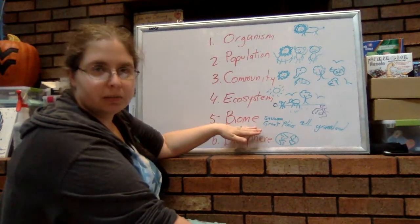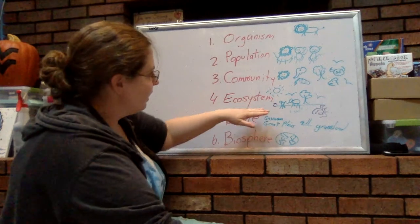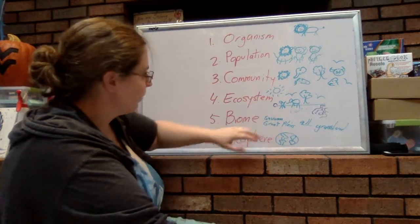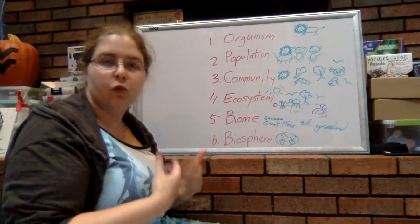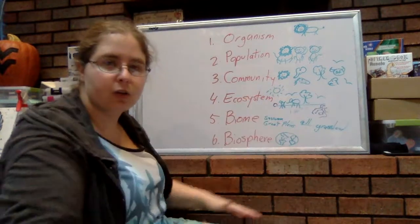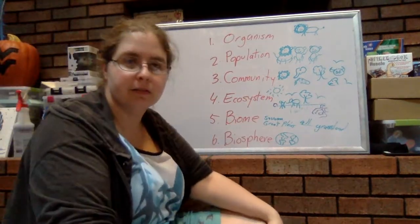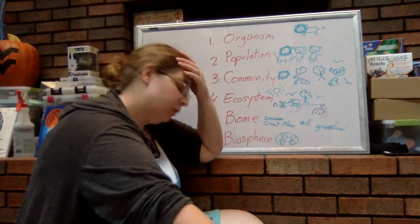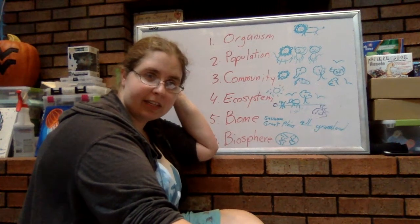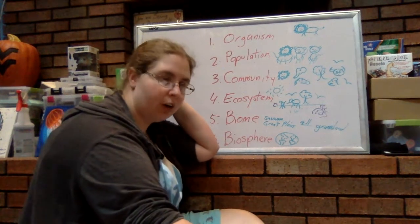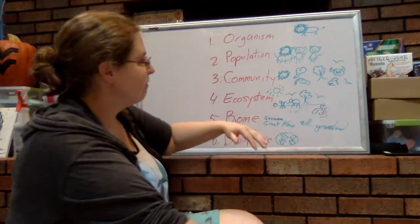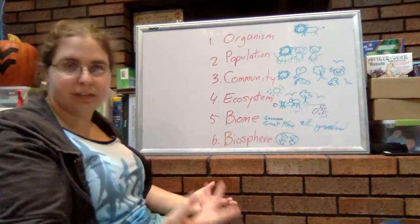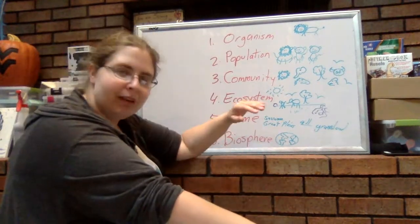Biome is all similar ecosystems. So we said that we were looking at a particular ecosystem, like the savanna. Biome would be grassland, and there are different grasslands around the whole world, like there's a savanna of Africa, the Great Plains of North America. I know that there are grasslands in South America and Europe and Asia and Australia. All of those are grasslands. They have similar weather patterns.